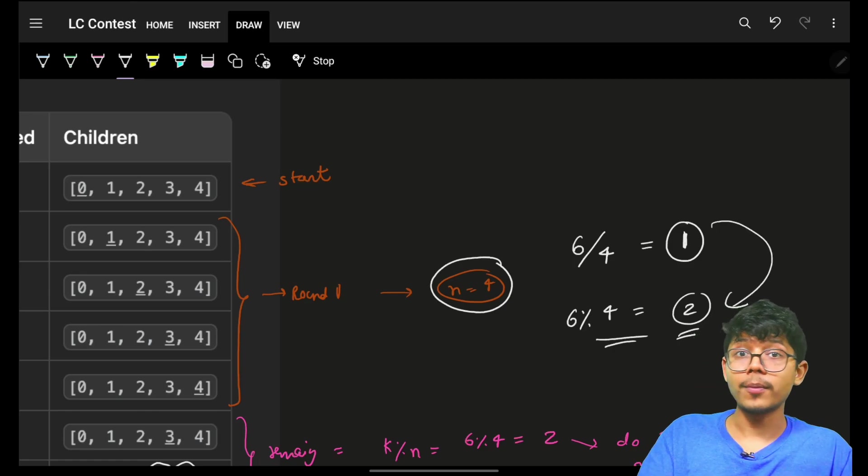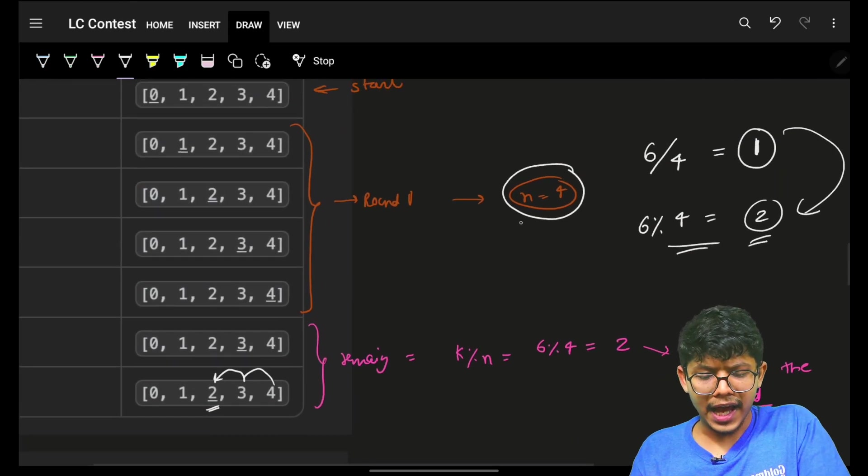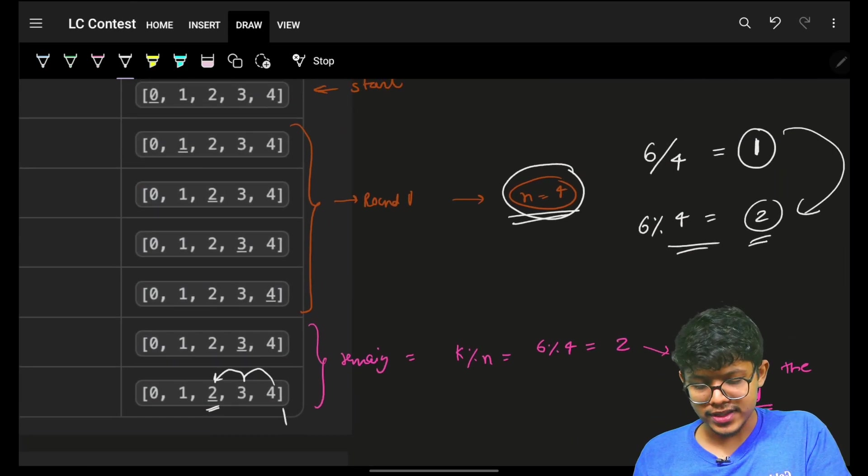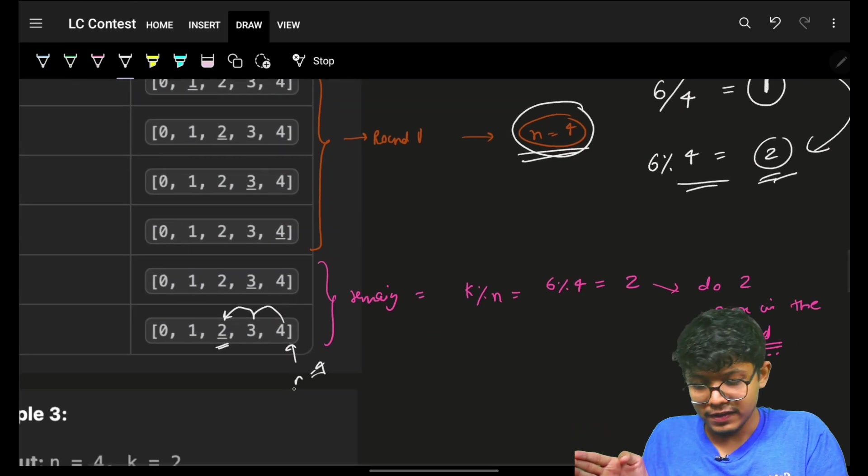As you have to go from the right, you will simply say, as you have simply reduced your n, you can simply say, my n is for sure here. I have to go 2 steps back. Which means, n minus 2 is my answer.